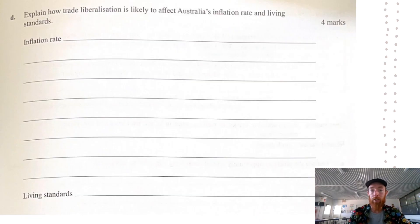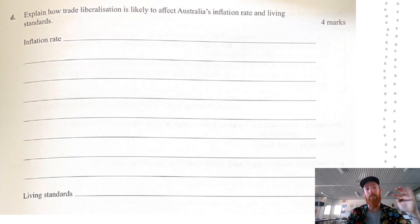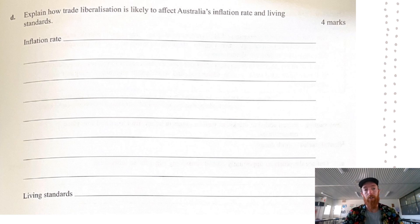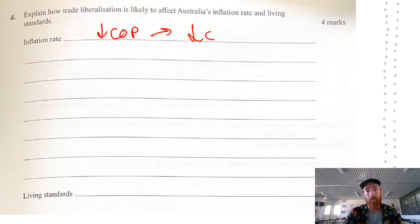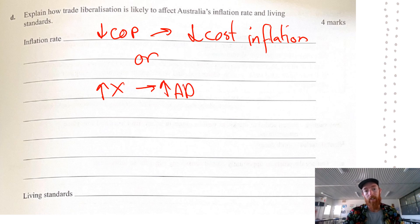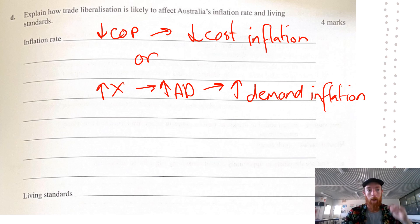For the last part of Question 3, explain how trade liberalisation may affect the inflation rate. Trade liberalisation is the removal of restrictions to trade and a move towards freer trade globally. Freer trade may decrease the cost of production for businesses and therefore decrease cost inflation. Alternatively, it could lead to increased demand for exports, increasing aggregate demand and therefore increasing demand inflation. There are two opposite avenues — either should be fine to discuss.